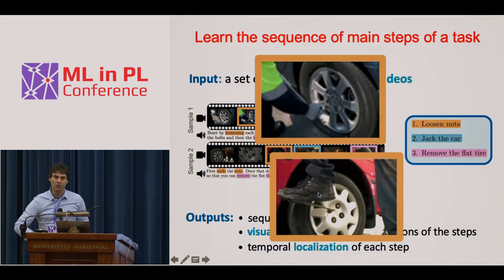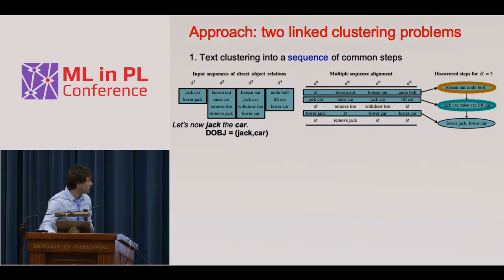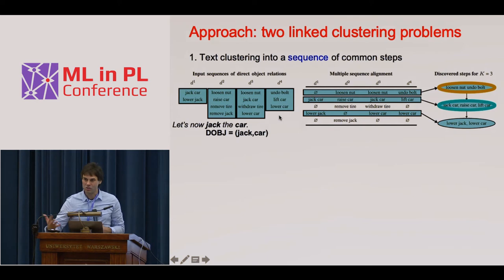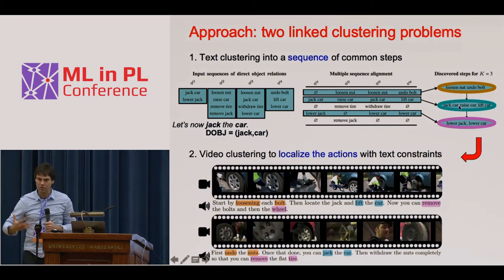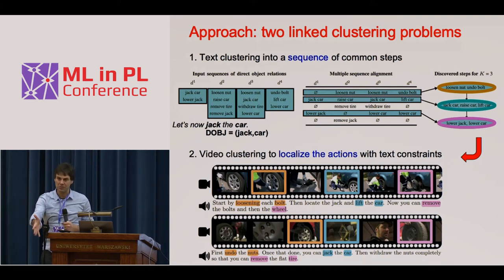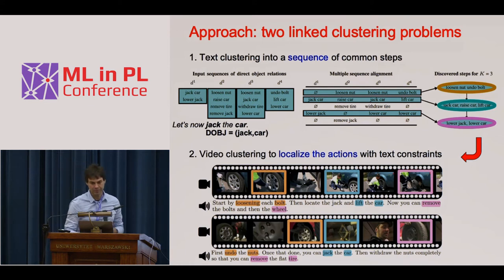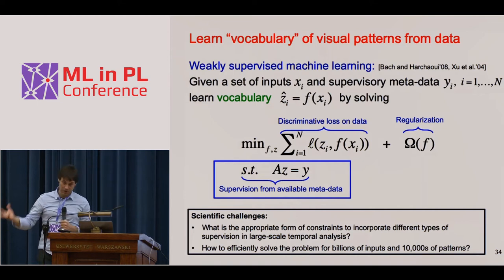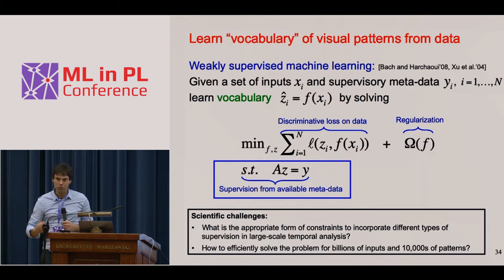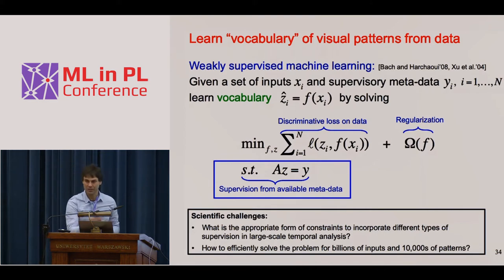The approach we've taken formulates this as two linked clustering problems. In the first, we analyze the language narration to extract the main sequence of steps shown in different colors. We then use these steps as a weak form of supervision to localize the actions in the video. The supervision is only weak because the narration doesn't give the precise moment where each step happens, only approximately.